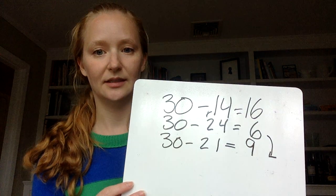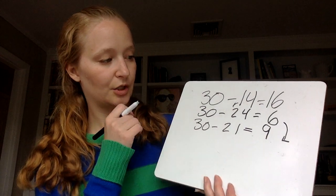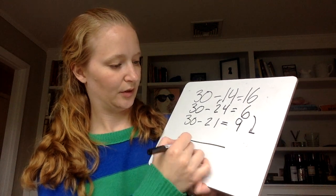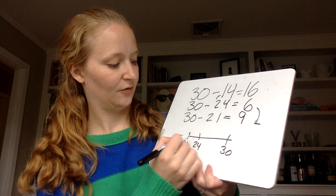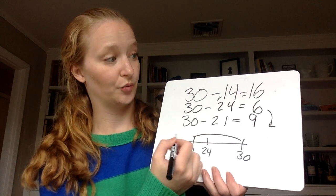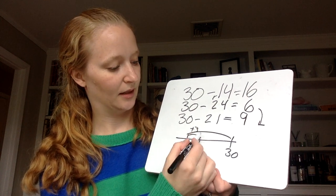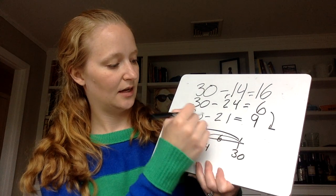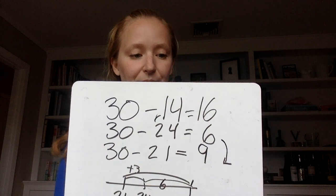I'm going a greater distance. If I'm going from 21 to 30, that's a longer distance than 24 to 30. This is a longer distance. It's 3 longer, right? So if this was 6, I know I have to go another 3, which is going to get me to that 9.